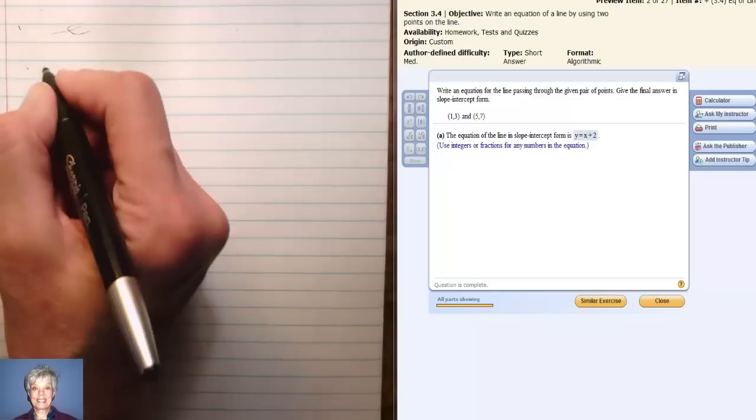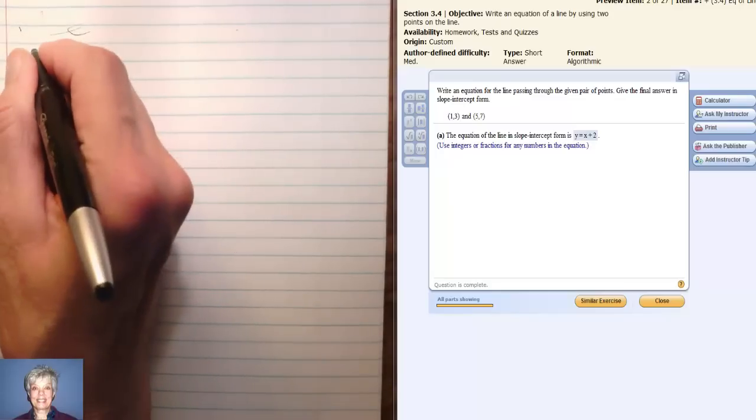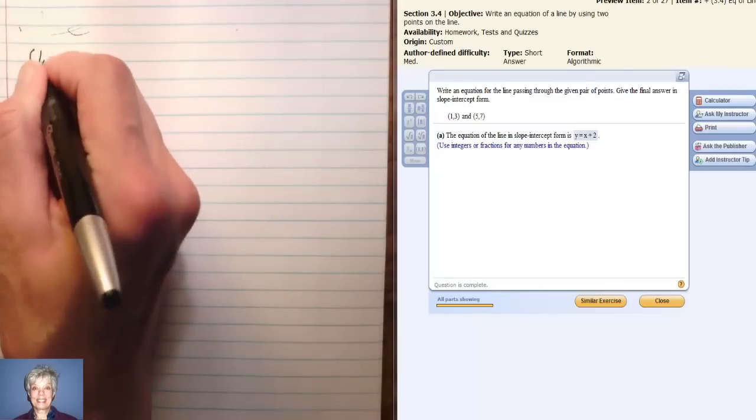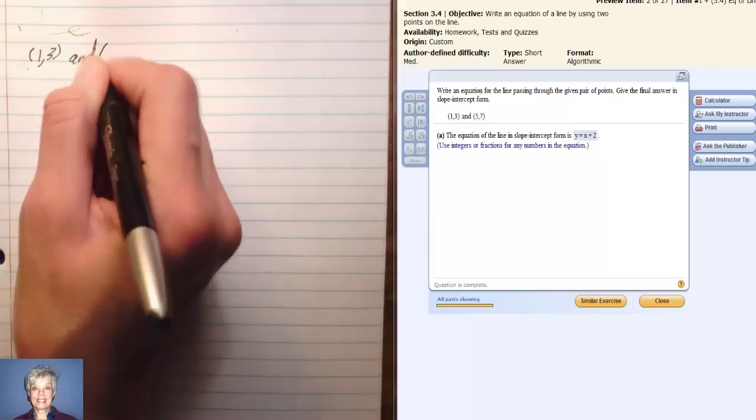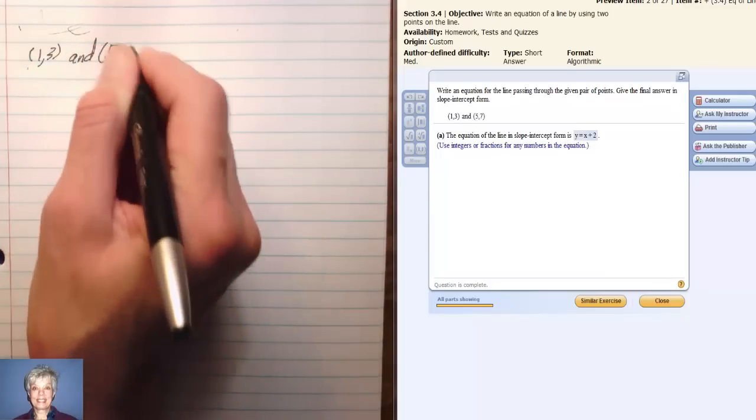Here are the two points the line goes through: the point (1, 3) and the point (5, 7).